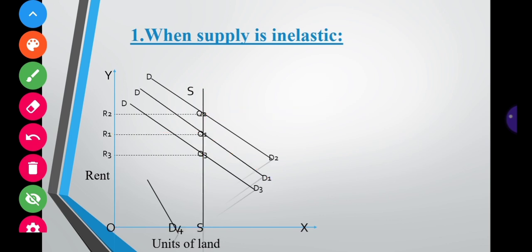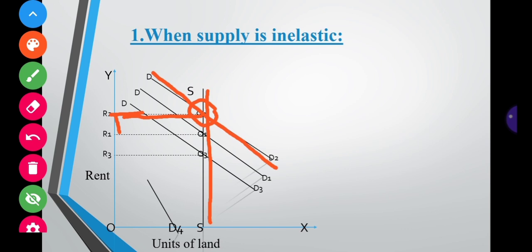Now assume that due to an increase in population or increased demand for products of land, demand for land also increases. The demand curve shifts upward from D1 to D2. The new equilibrium point is Q2, and therefore rent rises from R1 to R2. The SS curve remains constant.